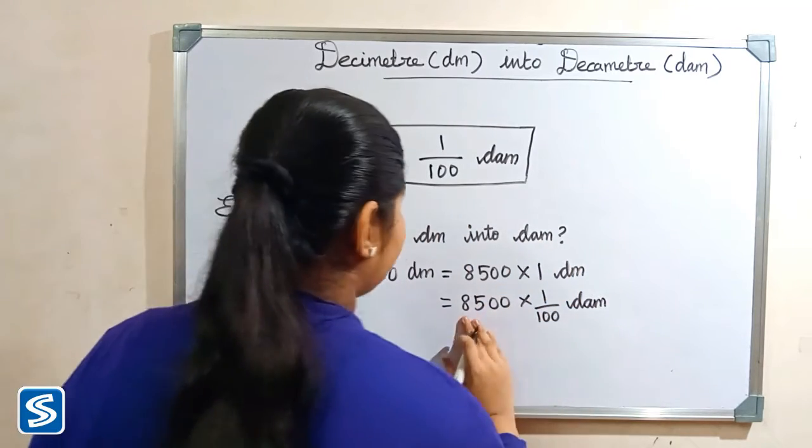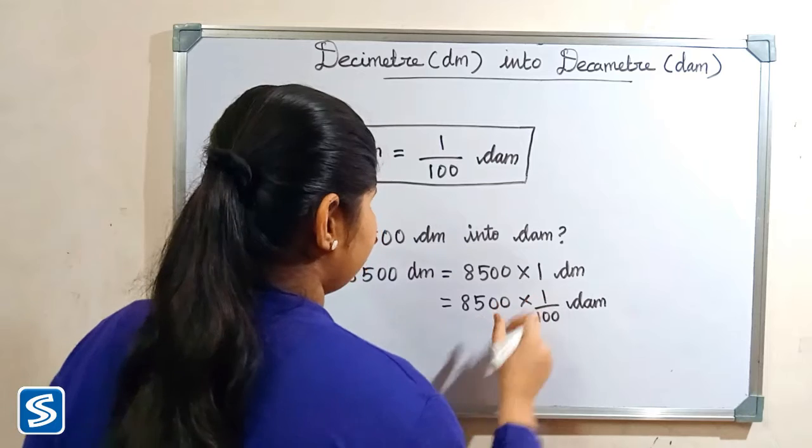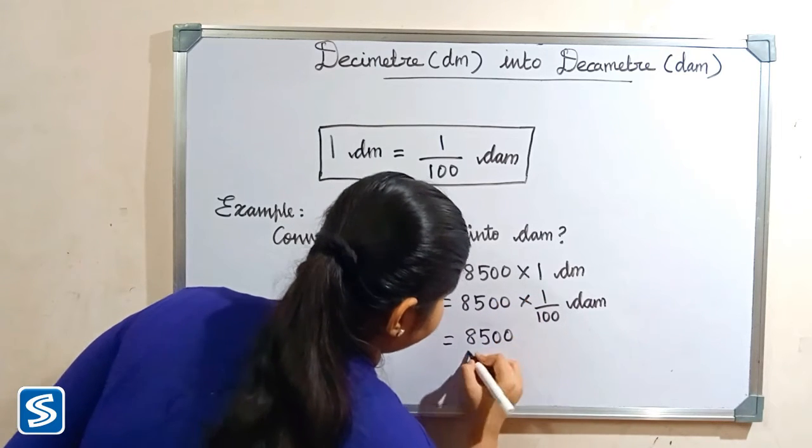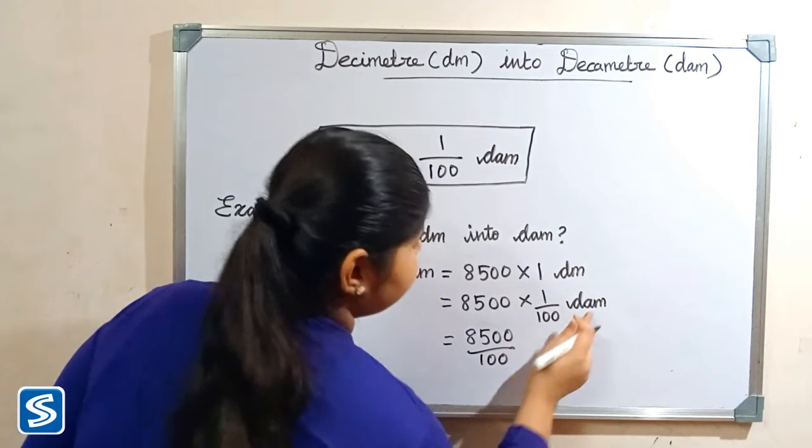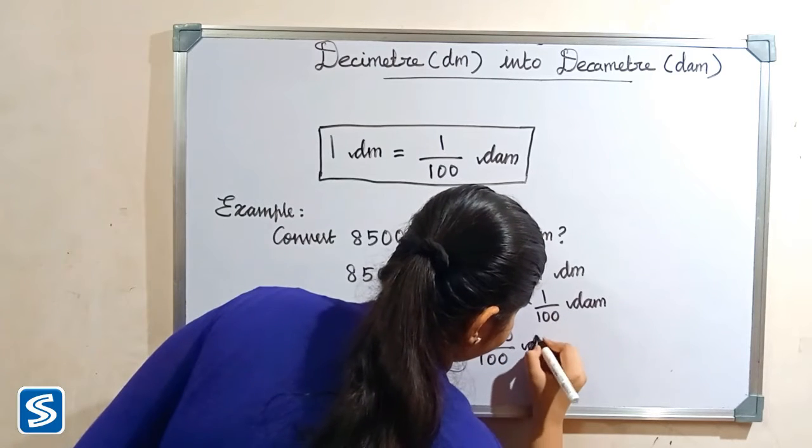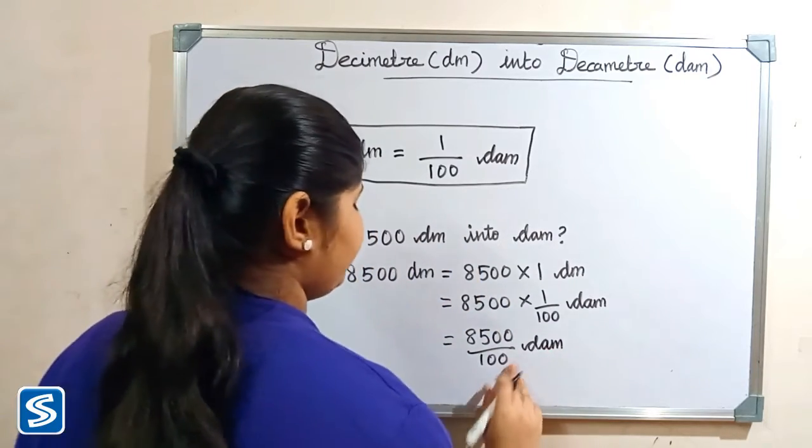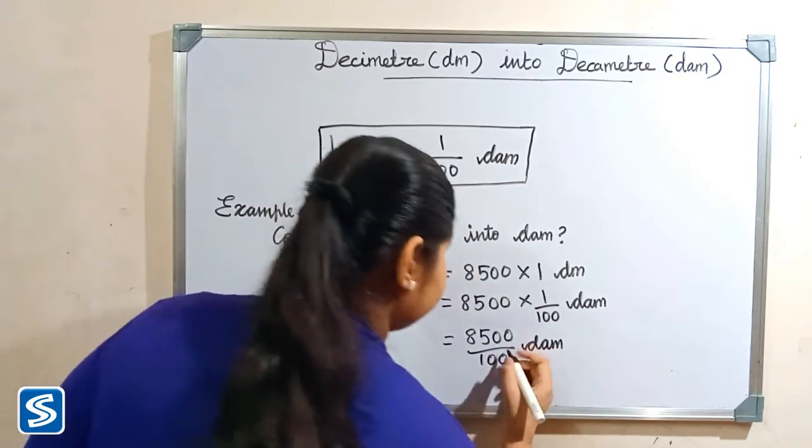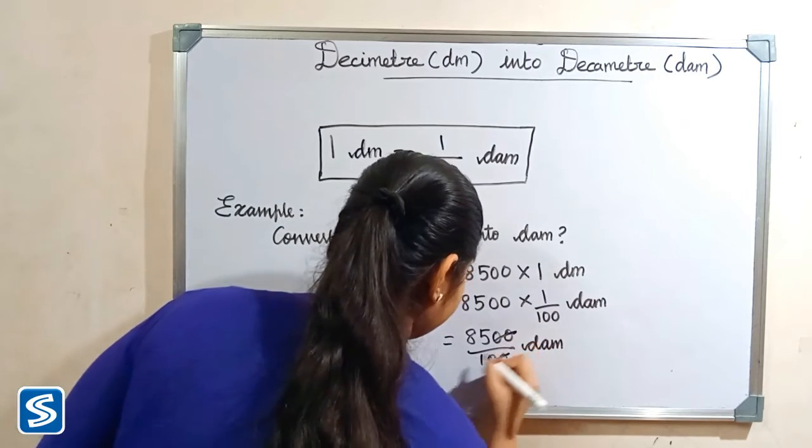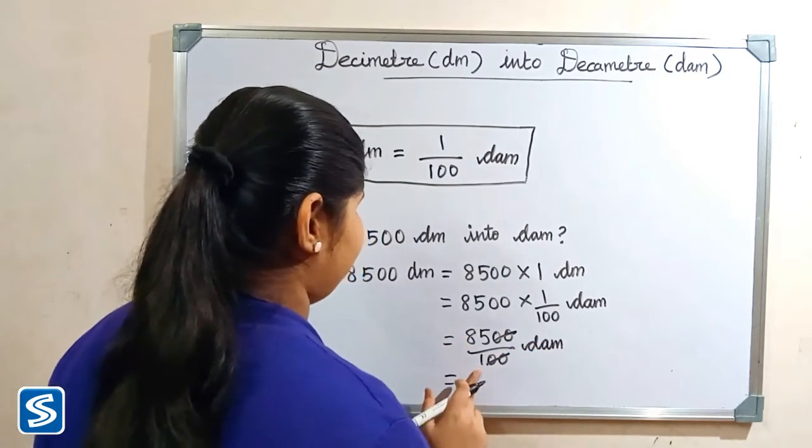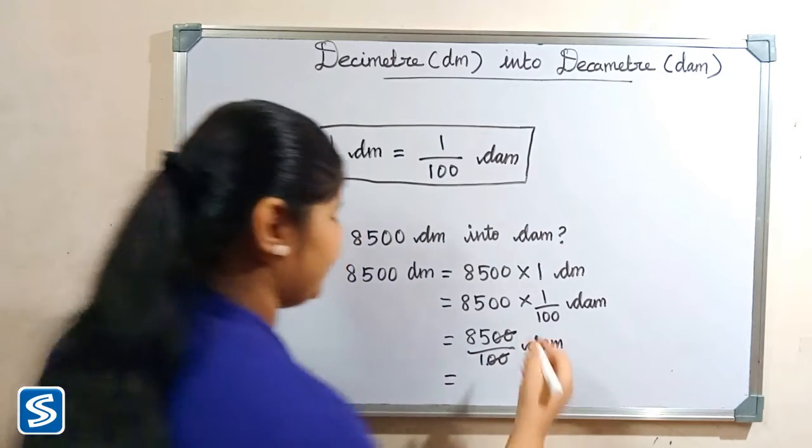So 8500 multiply 1 will be 8500 by 100 decameter. So here 0 and 0 gets cancelled. So when we divide 8500 by 100, our answer will be 85.